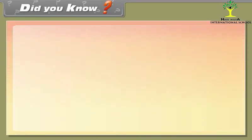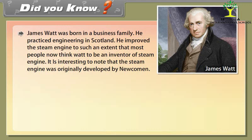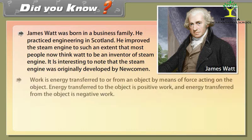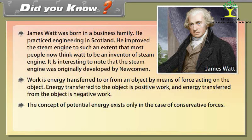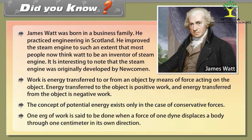Did you know? James Watt was born in a business family. He practiced engineering in Scotland. He improved the steam engine to such an extent that most people now think Watt to be an inventor of steam engine. It is interesting to note that the steam engine was originally developed by Newcomen. Work is energy transferred to or from an object by means of force acting on the object. Energy transferred to the object is positive work and energy transferred from the object is negative work. The concept of potential energy exists only in the case of conservative forces. One erg of work is said to be done when a force of one dyne displaces a body through one centimeter in its own direction.